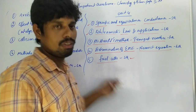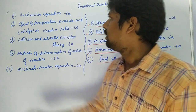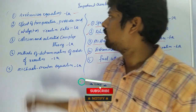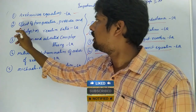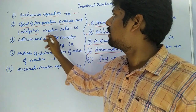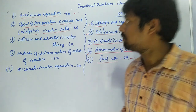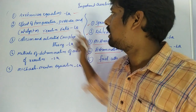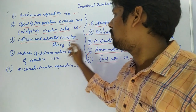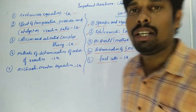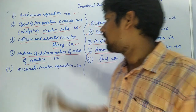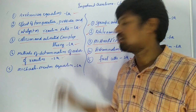From unit 4 coming to unit 5: the Arrhenius equation is the first long answer question. The second important long answer question in unit 5 is the effect of temperature, pressure, and catalyst on reaction rates. Also: collision theory and activated complex theory as long answer questions, and methods of determination of order of reactions as a short answer question.